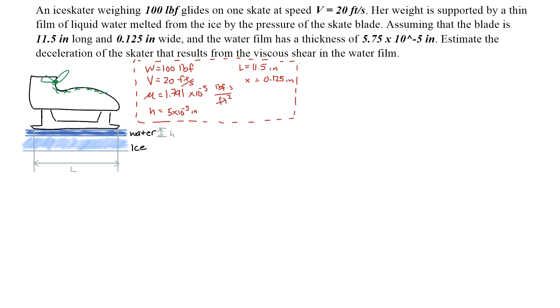Assuming that the blade is 11.5 inches long and 0.125 inches wide, and the water film has a thickness of 5.75 × 10⁻⁵ inches, estimate the deceleration of the skater that results from the viscous shear in the water film.